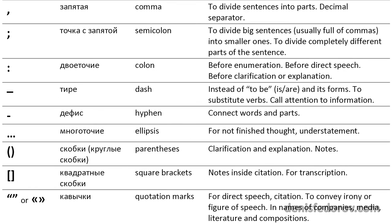Now the punctuation marks located inside the sentence. Comma — запятая in Russian — is the most common and widely used punctuation mark both in Russian and English. It is used for everything: dividing the parts of the sentence, marking out its parts, for intonation purposes and so on. In Russian, sometimes commas are placed the same as in English and sometimes not the same. Remember that in Russian we use commas more frequently.